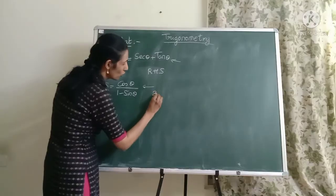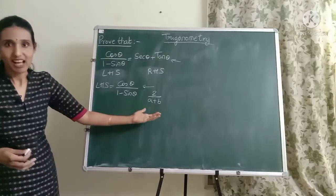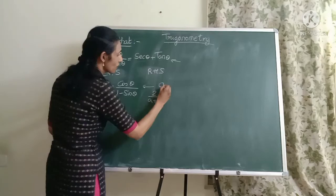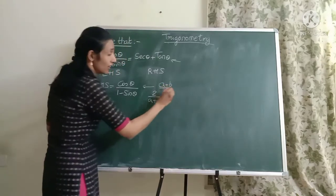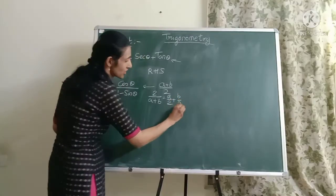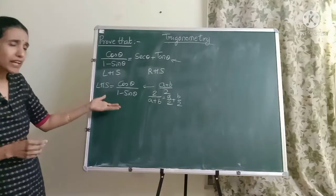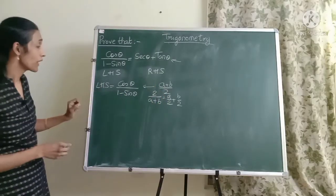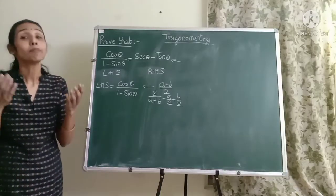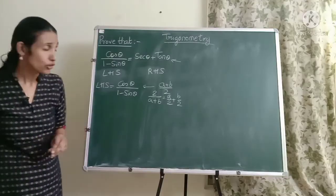Because suppose I have 2 divided by a plus b. What really can I do with this? I really can't split it up further. On the other hand if I have something like this, yes then there is scope. I can write, I can split the fraction and write like this a by 2 plus b by 2. So let's try to bring something of this type over here also and the best way of doing this is by rationalizing. You must have studied rationalizing for square roots. So the same technique friends we are going to use here.